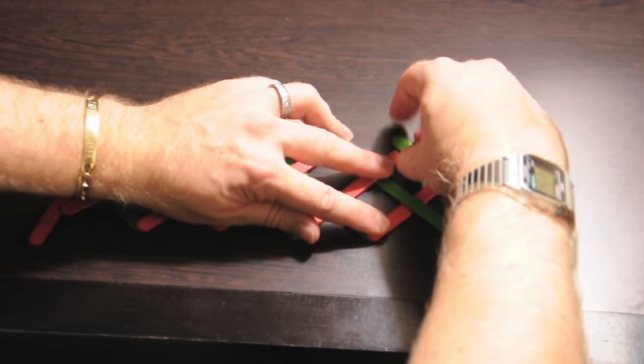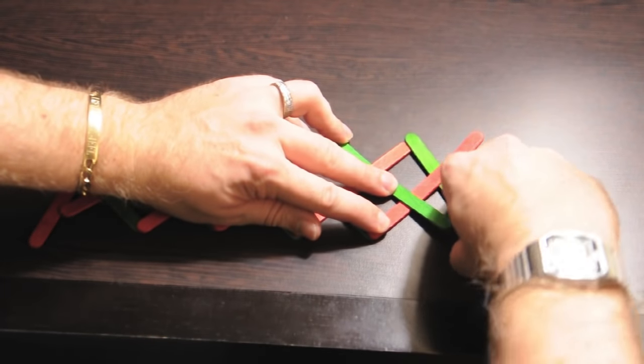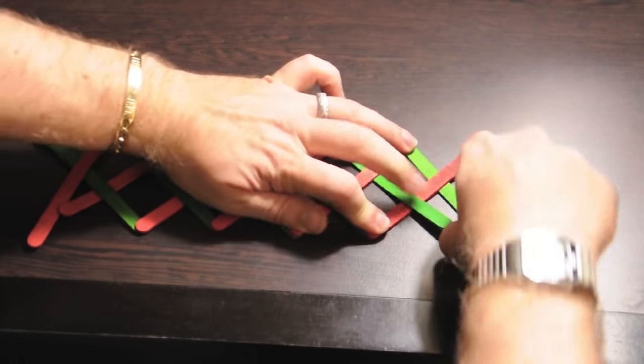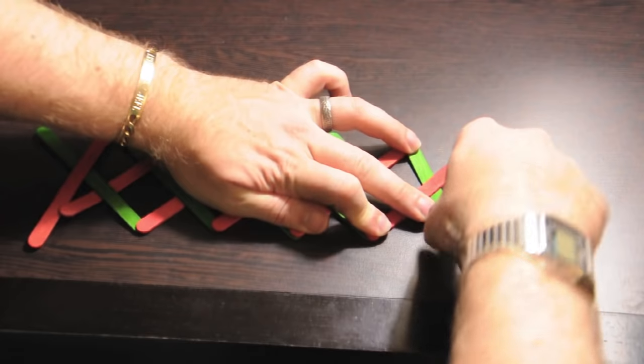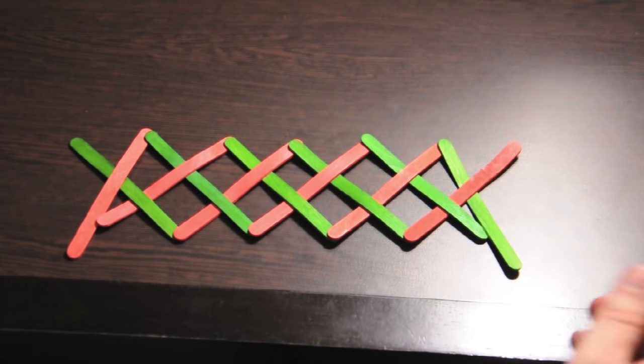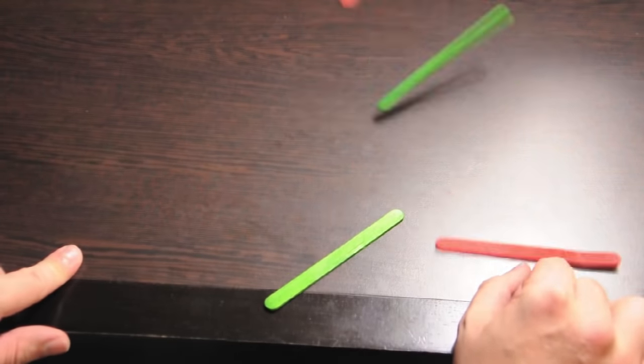When you get to the other end, which I will do, you add another trigger, which will do the same thing. Go over, under, over. And so there you have a very small stick bomb, and that's how you build it. You just set it up.